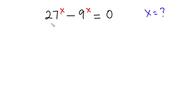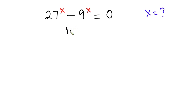Hello everyone. In today's video we have this exponential equation: 27 to the power x minus 9 to the power x is equal to 0, and we have to find the value of x. I'll be using two methods to solve this problem, so let's begin with the first method.